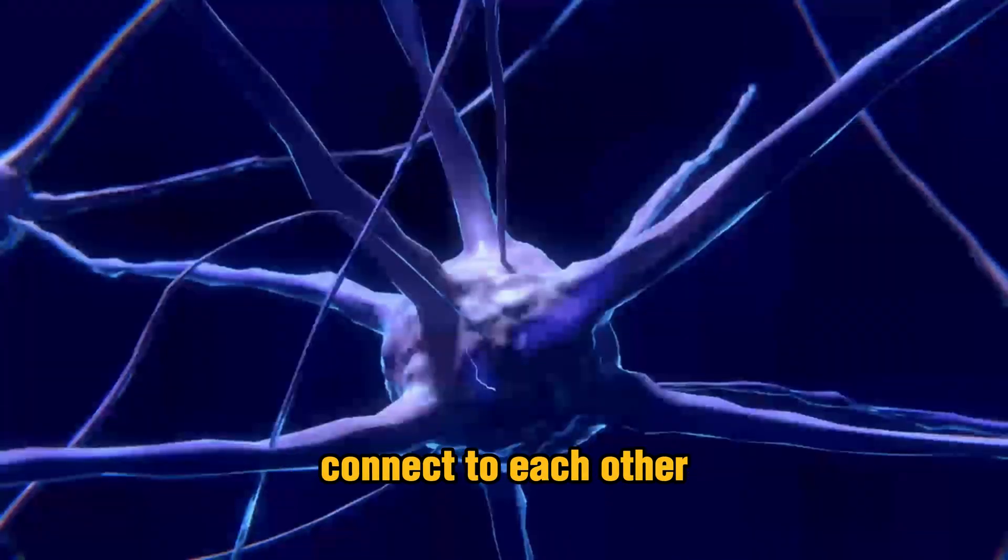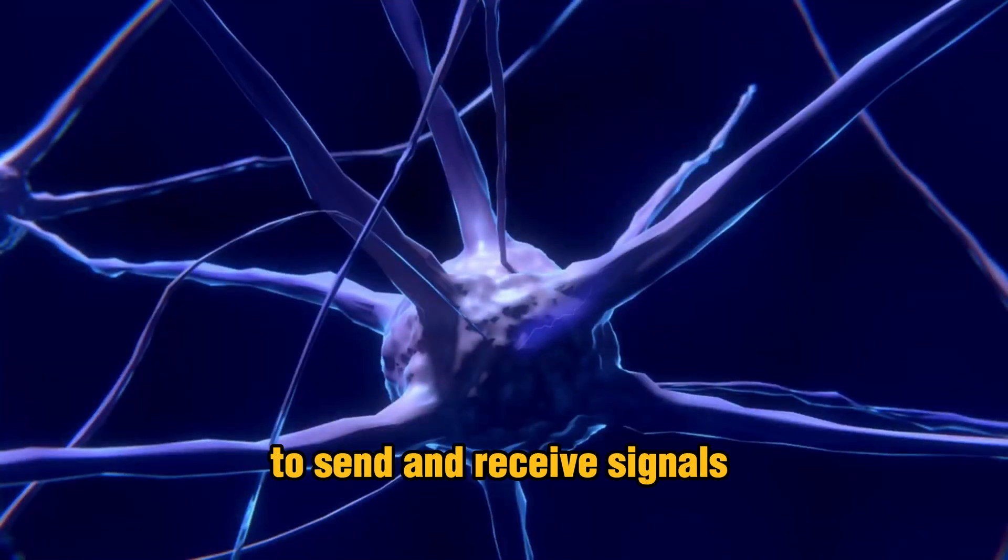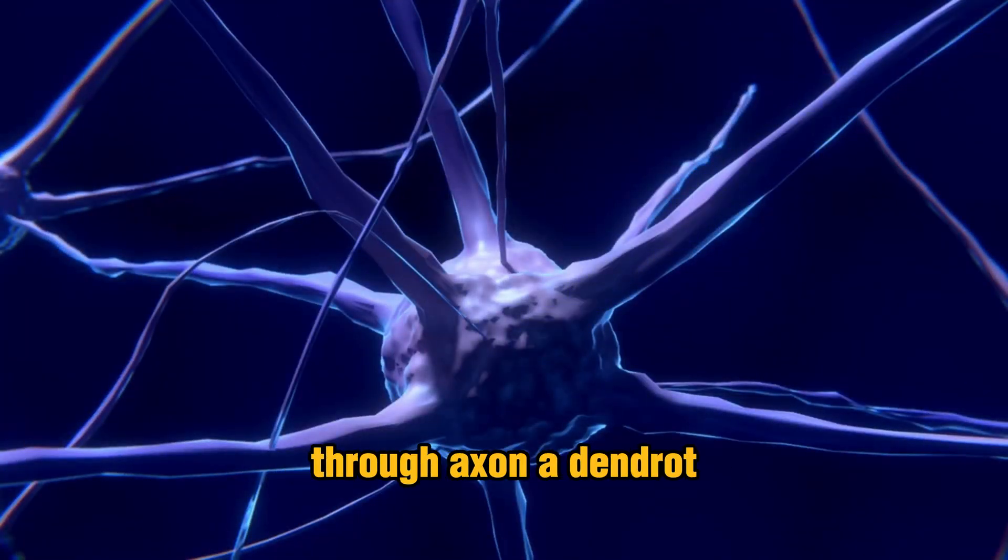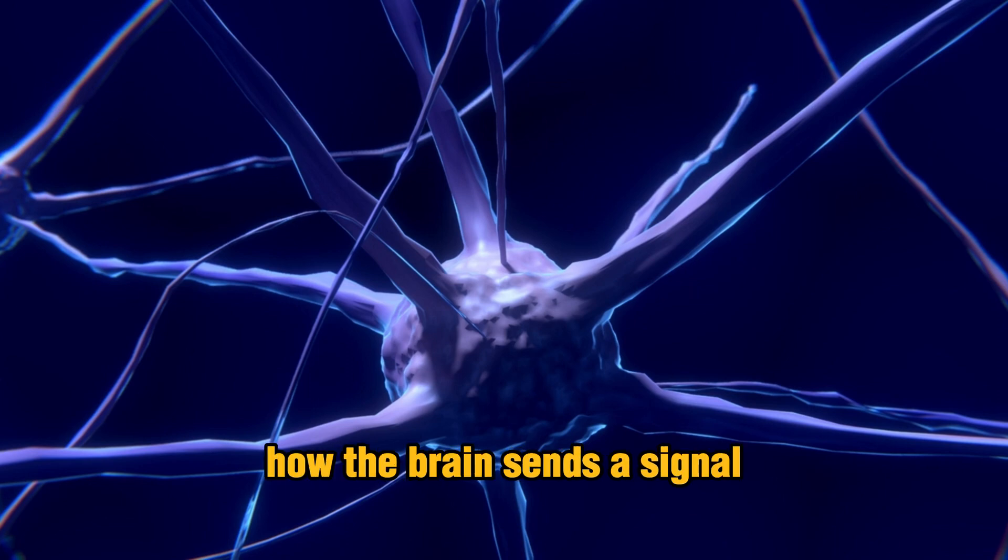The neurons of your brain connect to each other to send and receive signals through axon to dendrite. This is the basics of how the brain sends a signal.